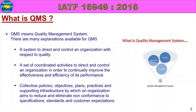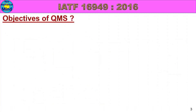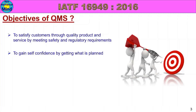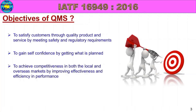Now, the objectives of QMS. The quality management system main objective one: to satisfy customers through quality product and service by meeting safety and regulatory requirements. Main objective two: to gain self-confidence by getting what is planned. Main objective three: to achieve competitiveness in both the local and overseas markets by improving effectiveness and efficiency in performance.